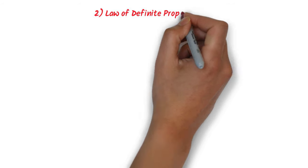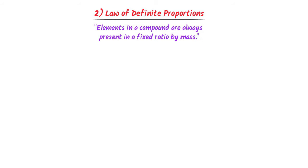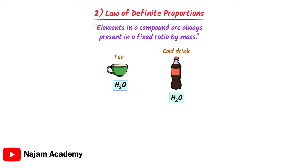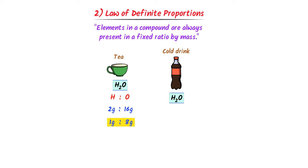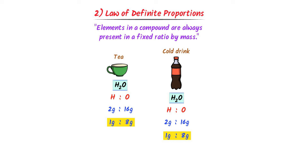The second law is the law of definite proportion. It states that the ratio of mass of hydrogen to the mass of oxygen is 2 grams to 16 grams, or 1 gram to 8 grams — whether in water or in a cold drink. It means that the ratio of masses of elements remains the same everywhere in any compound.